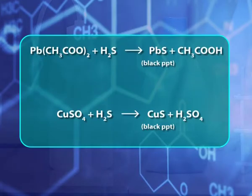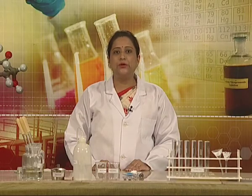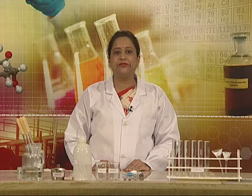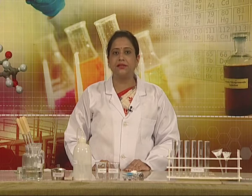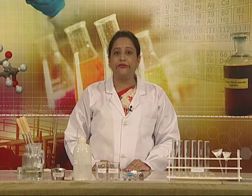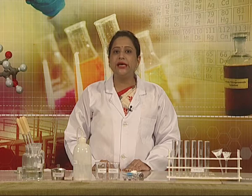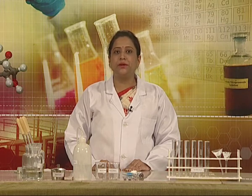When H2S solution is added to the acidic original solution of the salts of lead and copper, black precipitates of lead sulfide and copper sulfide are formed. The solubility product value of sulfides of group 2 cations is very less. Therefore, we take acidic original solutions before adding H2S solution.